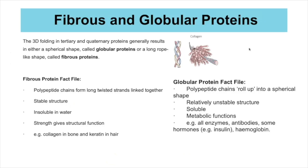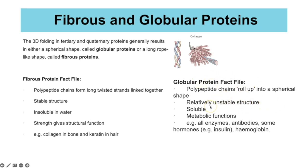Proteins can be grouped as fibrous or globular based on their final 3D shape. Fibrous proteins have polypeptide chains forming long twisted strands that link together — they are very stable, insoluble in water, and provide structural strength. Examples include collagen in bones and keratin in hair. Globular proteins are normally spherical, relatively unstable, and soluble, and are involved in metabolic functions such as enzymes, antibodies, and some hormones. Their sensitivity to changes in pH and temperature is what is meant by 'relatively unstable'.